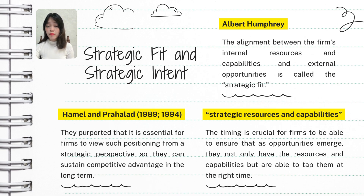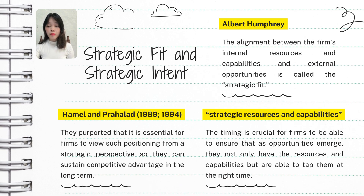According to Hamel and Prahalad, companies need to have a bigger vision and focus on: core competencies — what they do best and what makes them unique; innovation — continuously improving and adapting to stay relevant as the market changes; and long-term goals — looking beyond immediate profits to build a sustainable competitive advantage. One of the best examples is Apple, which continuously innovates and positions itself as a leader in technology, ensuring it stays competitive not just today but in the future. This mindset helps businesses sustain a competitive advantage and thrive over time.